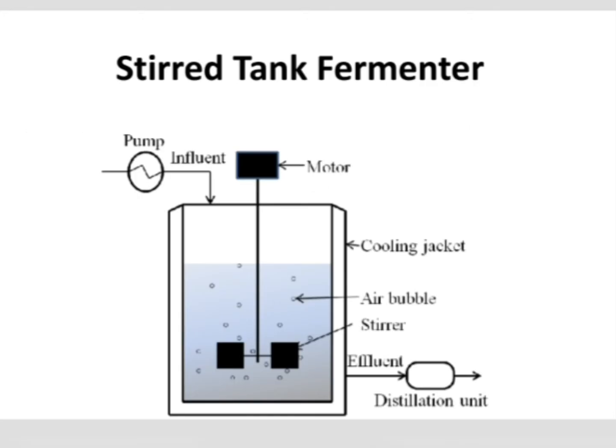This is the diagram of a stirred tank fermenter. It is a cylindrical vessel with a shaft at the center, connected to the motor at the top and the impeller at the bottom. The impeller continuously rotates, agitating the contents so that air and all dispersed materials get homogeneously mixed. It is connected with a cooling jacket because the mechanical process generates heat that must be controlled. The effluent — the products or culture medium taken out — is collected for product extraction and sent to the distillation unit.